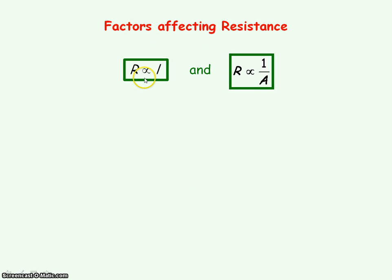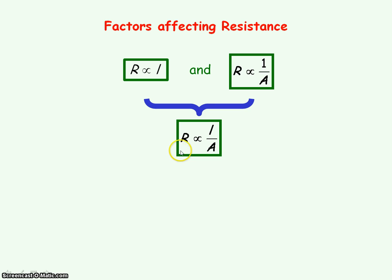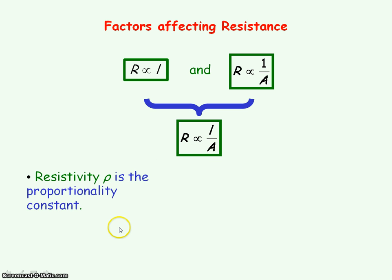Resistance R is directly proportional to length L if the cross-sectional area is kept the same. If we combine these two relationships, we can say that R is proportional to L divided by A. To form an equation we introduce a proportionality constant known as resistivity, given the symbol rho (ρ).